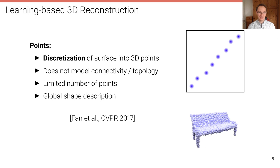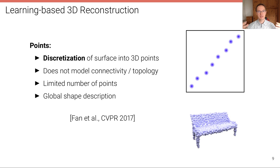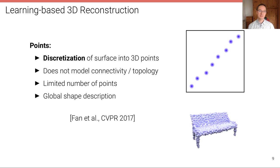Point sets, popularized by Fan et al. at CVPR 2017, directly represent the surface as a set of 3D points. Unlike voxels, this is not a volumetric representation but a surface discretization. The difficulty is that point sets don't model connectivity or topology — a surface must be extracted via post-processing such as Poisson surface reconstruction, which isn't accounted for during training. These models are also limited in the number of points they can represent and typically require a global shape description as input.